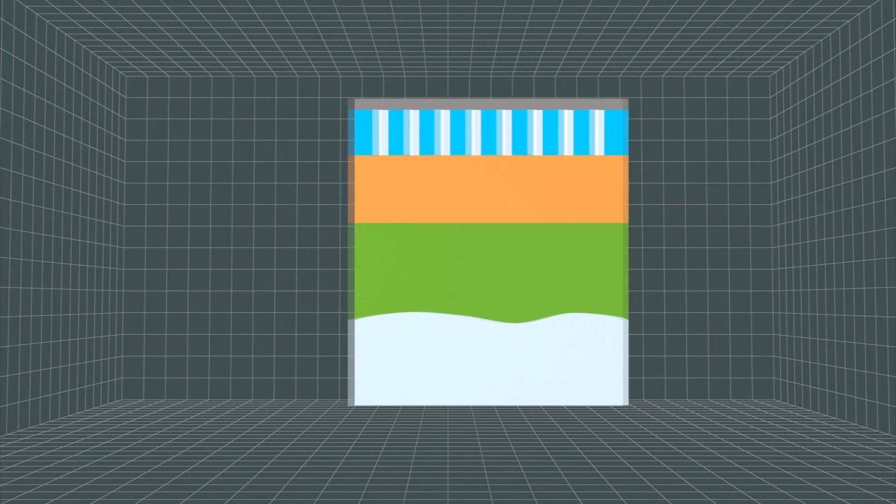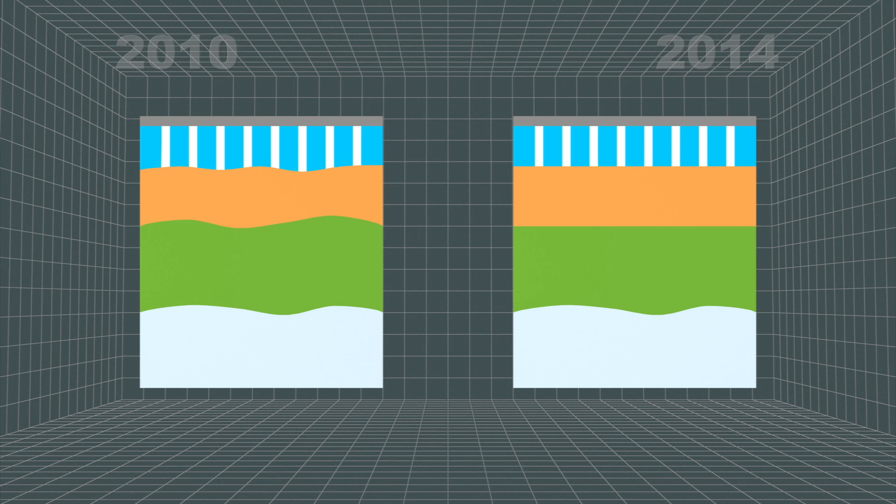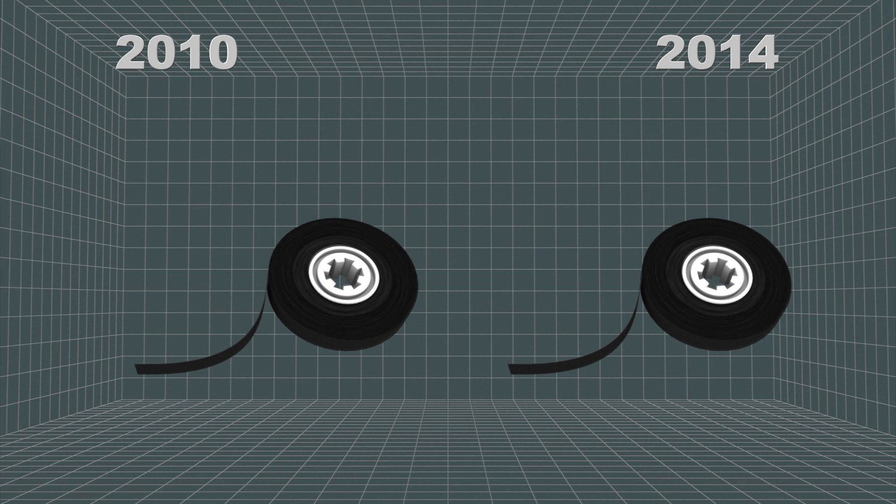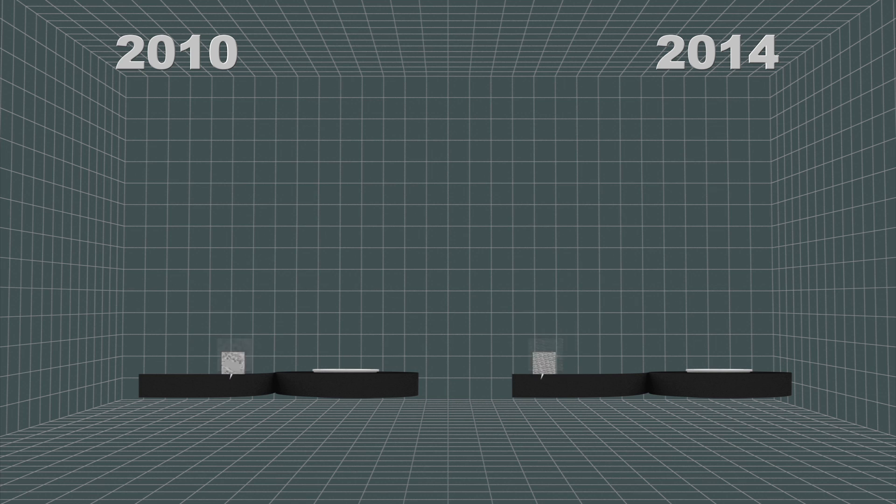Roughness in the tape's underlayer in existing technologies causes the magnetic crystals to be deposited irregularly. Sony has developed an underlayer with a smooth interface, which minimizes disparities in crystal placement and size.